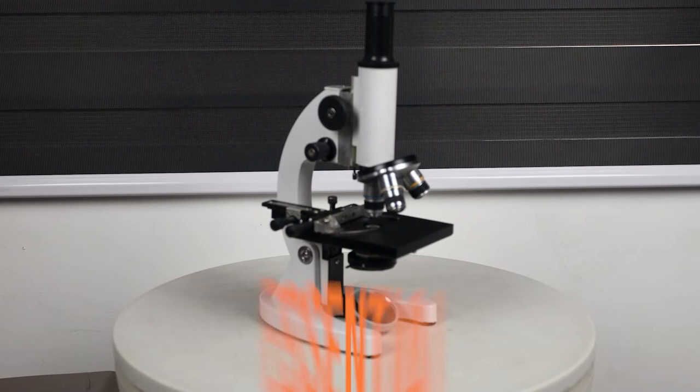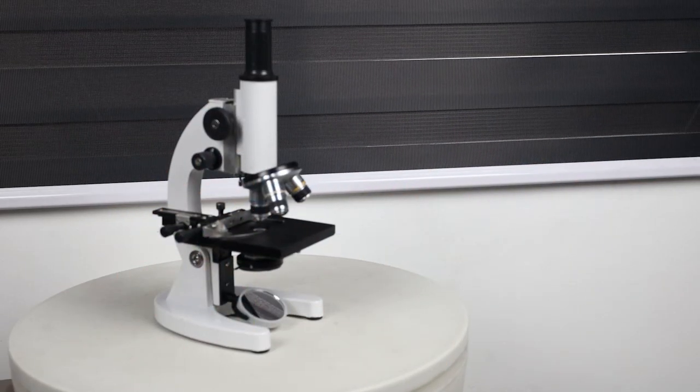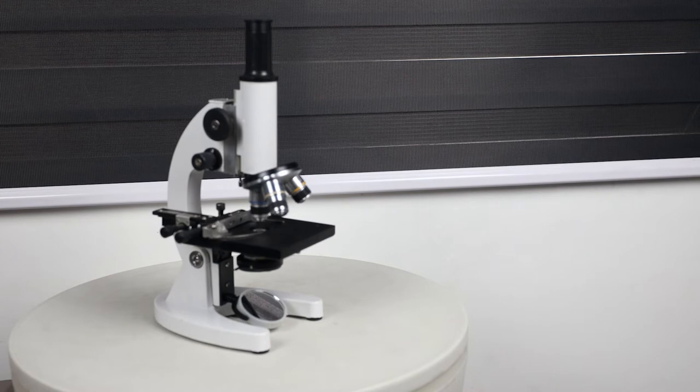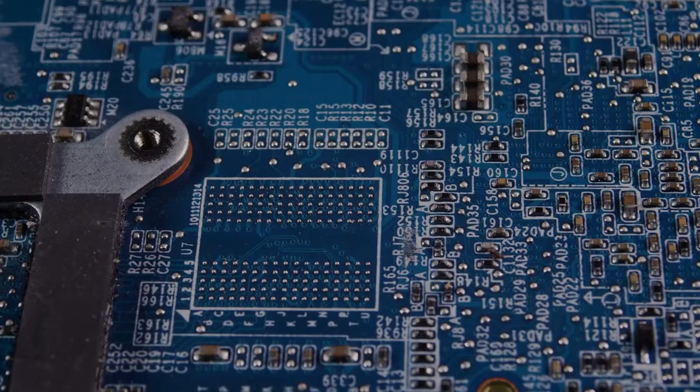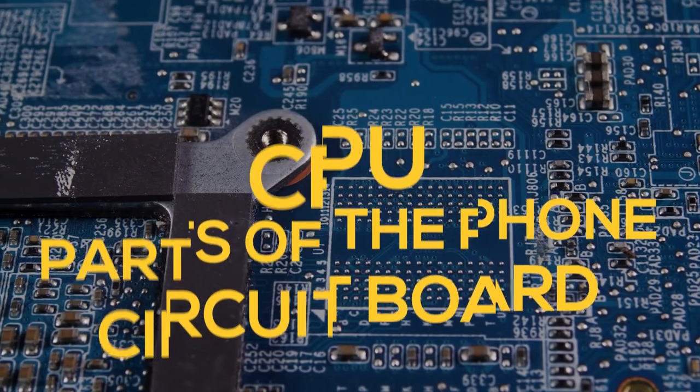A microscope is one of the essential tools to observe small specimens, not only for observing cells or microorganisms, but also to observe the small parts of electronics like the CPU, parts of the phones and circuit boards.